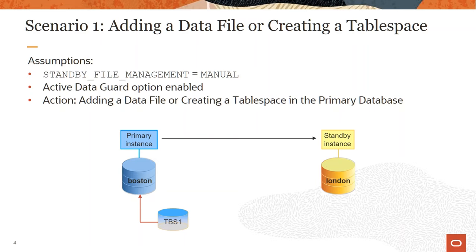Scenario 1 is adding a data file or creating a tablespace. The best practice is to manage physical structure changes in the primary database. In the standby database, we need to set standby_file_management equals to auto. So when you create a tablespace in the primary database, the standby database also creates the same tablespace automatically.